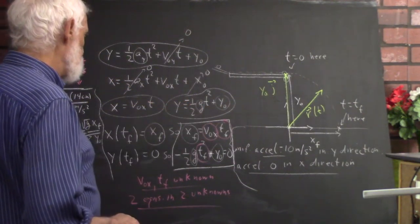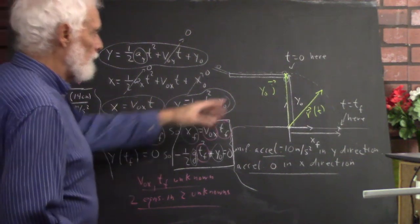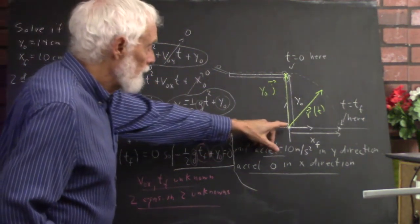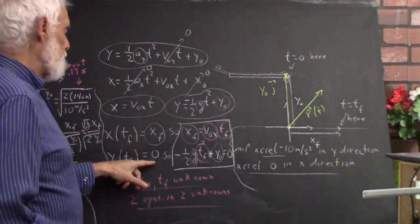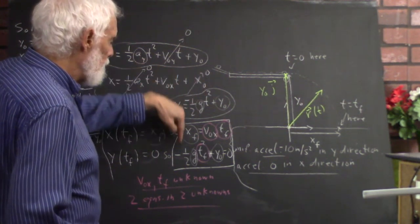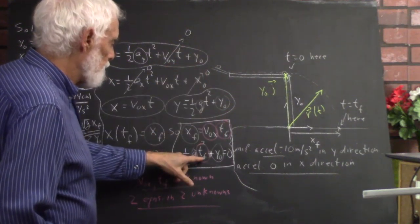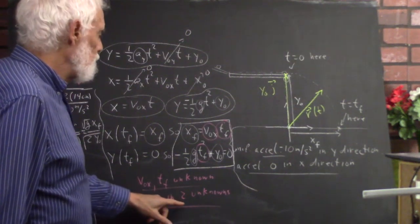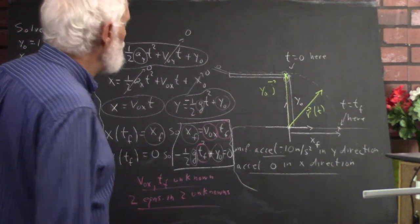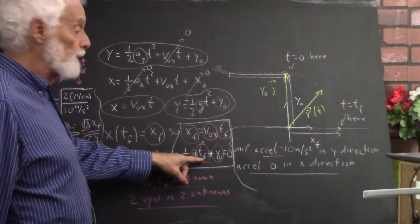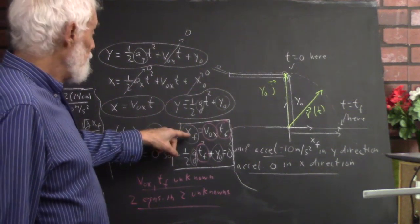Here's our equation for the vertical motion, and y at t-sub-f is zero, because at the final time you're all the way down to where the y-coordinate is zero. So when t equals t-sub-f and y is zero, that gives us this equation. Now we see that we have two equations in two unknowns — v-naught and t-sub-f. We can solve those equations; this vertical equation can be solved for t-sub-f, and that solution plugged into the x-equation gives us x-sub-f.